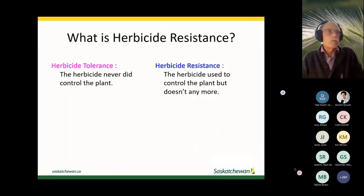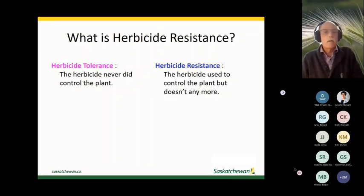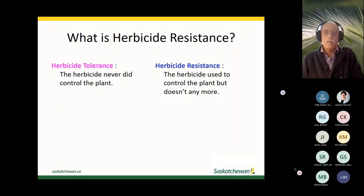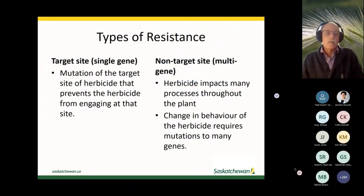Herbicide tolerance is something that's always been there — the plant was never controlled by the particular herbicide and won't be in the future. Herbicide resistance is different in that the plant used to be controlled but it's not anymore, and there are different types of herbicide resistance out there.